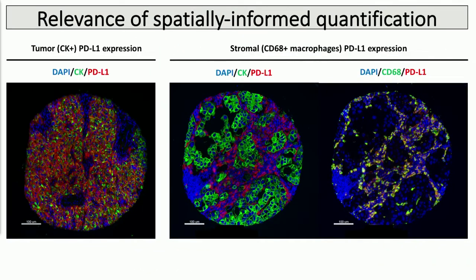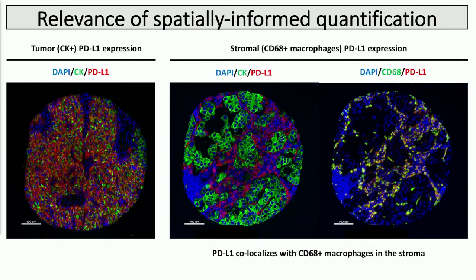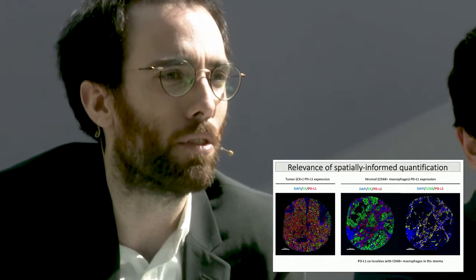This is actually the principle of what happens in tumors as well. These are lung tumors. On the left-hand side, there's a tumor showing staining for cytokeratin and PD-L1, and you can see that most of the PD-L1 is co-localizing in cytokeratin-positive tumor cells. But on the right-hand side, the cytokeratin-positive cells are not staining for PD-L1; instead, most of the PD-L1 is being stained in the stroma — specifically in particular cells that are positive for PD-L1. If you add CD68, you can tell that PD-L1 is co-localizing mostly with CD68-positive cells in the stroma.